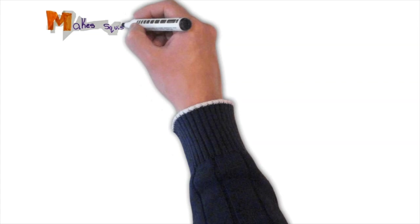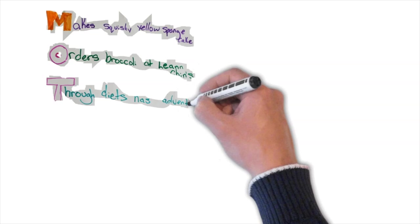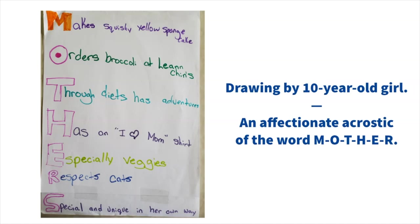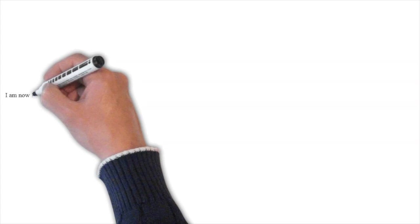Here's a drawing by a ten-year-old girl, before alienation. She's drawn an affectionate acrostic of the word mother, M-O-T-H-E-R. It starts, M, make squishy yellow sponge cake. It ends, special and unique in her own way.